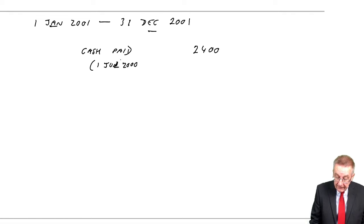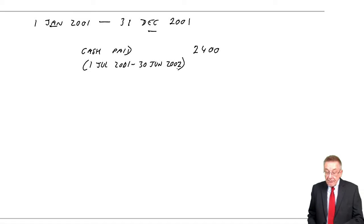So I'm not surprised that the next bill she gets is in June 2001, and that's for the 12 months through to June 2002. We're looking at the period 1st January 2001 through to 31st December 2001—that's Karen's year. The cash paid during the year was $2,400.